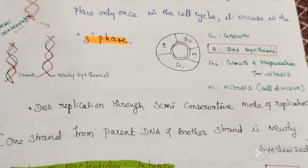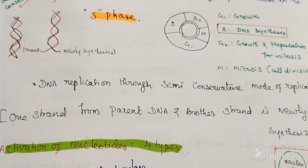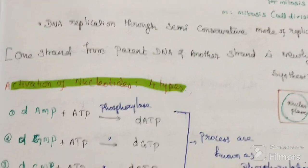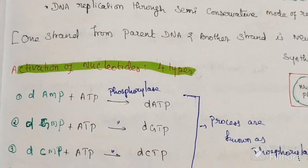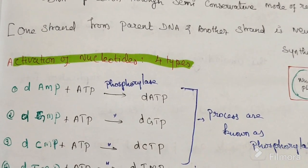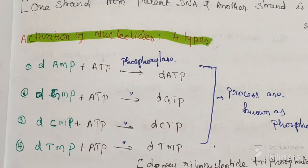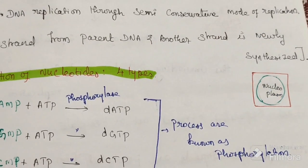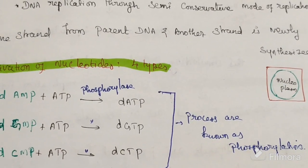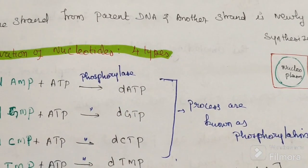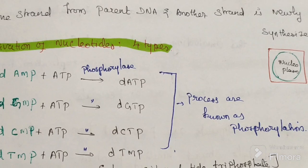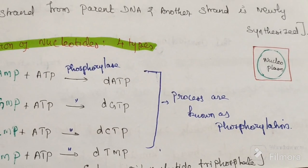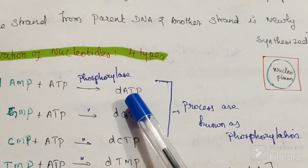Activation of nucleotides. There are four types of nucleotides in DNA: deoxyribose AMP (adenosine monophosphate), deoxyribose GMP (guanosine monophosphate), deoxyribose CMP, and deoxyribose TMP. All are present in the nucleoplasm. They are activated by ATP in the presence of the enzyme phosphorylase, resulting in the formation of deoxyribonucleotide triphosphate — that is, deoxyribose adenosine triphosphate.